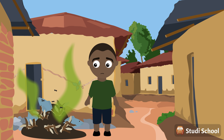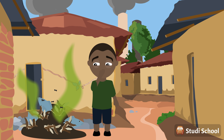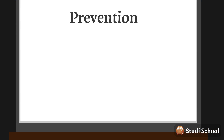Organic waste left in the open can attract insects and cause horrible odors. And releasing gases into the air can contribute to global warming because of the greenhouse effect. So how can we prevent these negative effects?